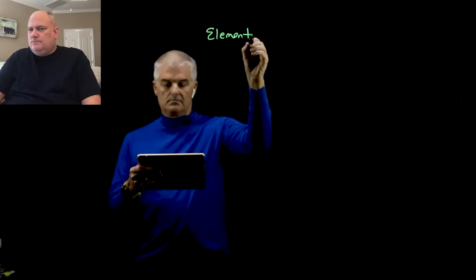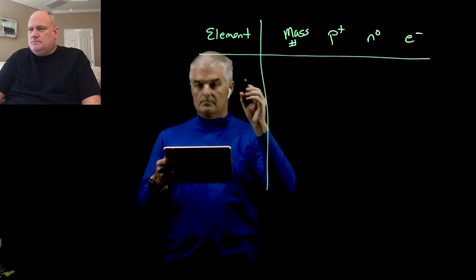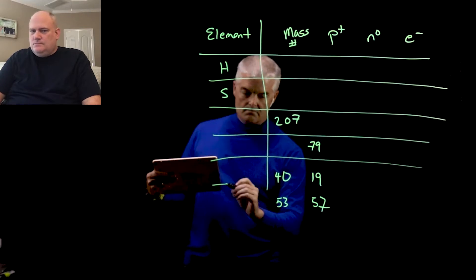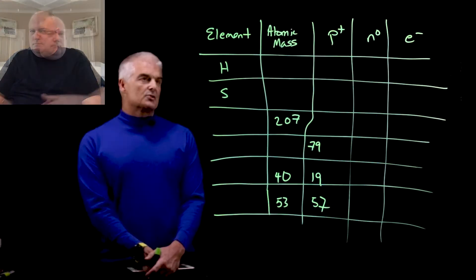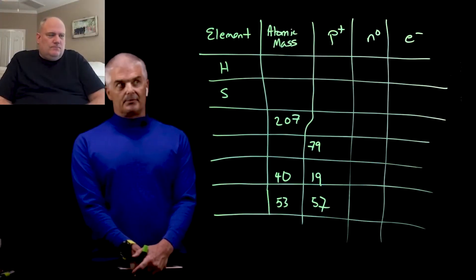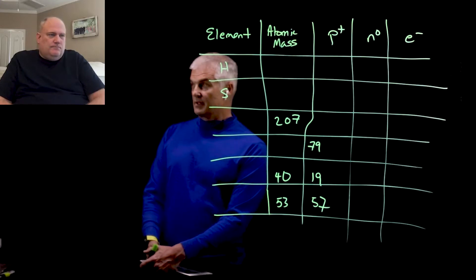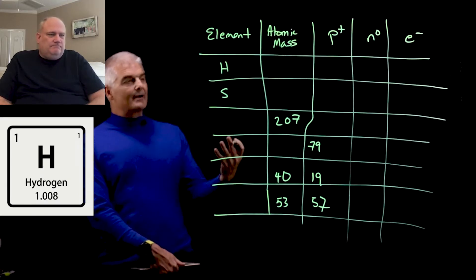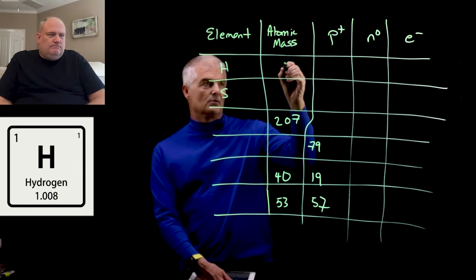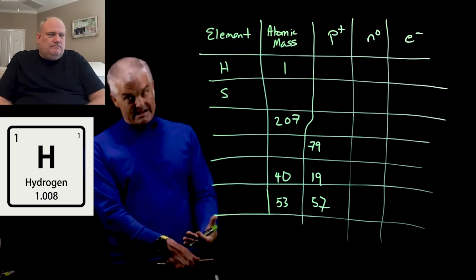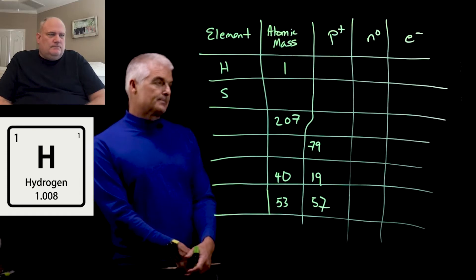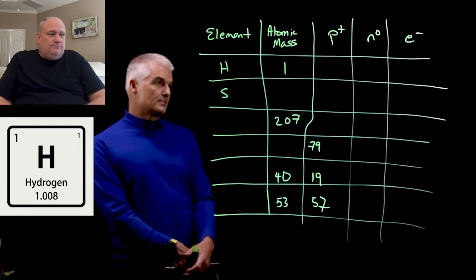I'm going to make a chart right now and fill it in so you get a good example of how this looks. Let's start with the simplest element, hydrogen. Looking at the periodic table for hydrogen, what is the mass of hydrogen? It's 1.008 — so we round to the nearest whole number, which gives us 1. The atomic number is equal to the number of protons, so hydrogen has just 1 proton.